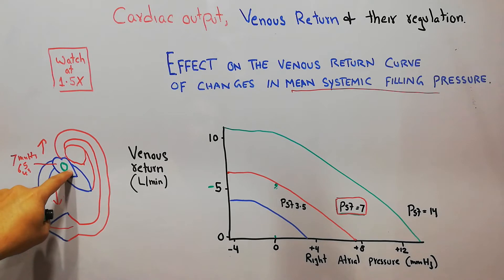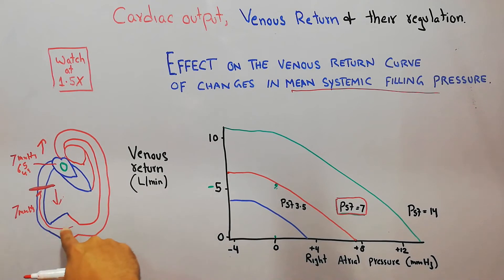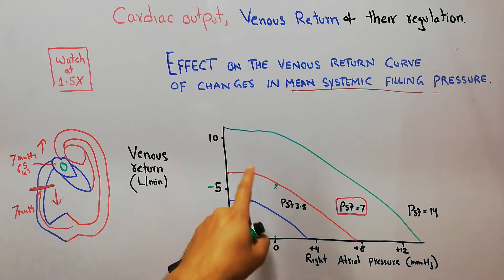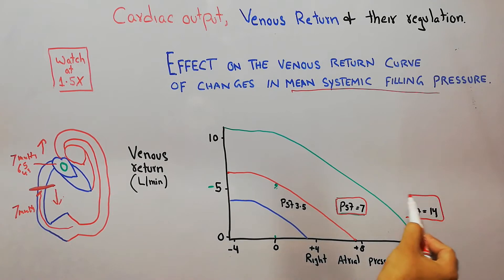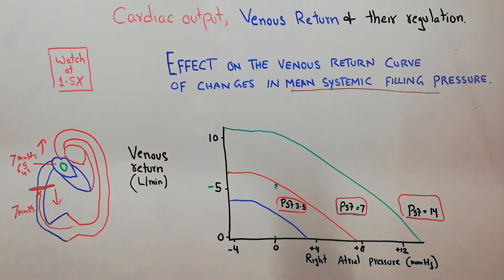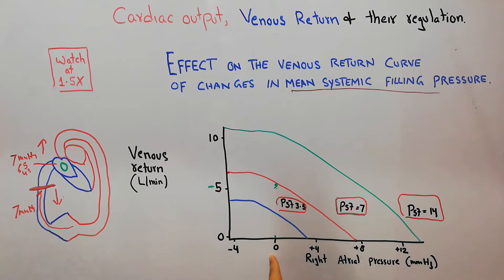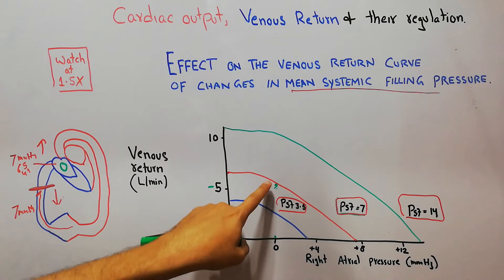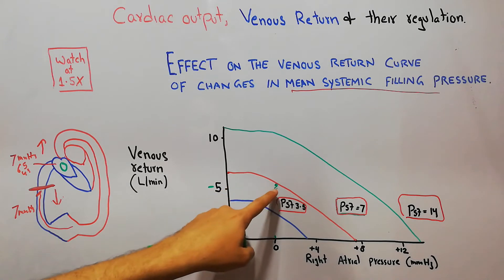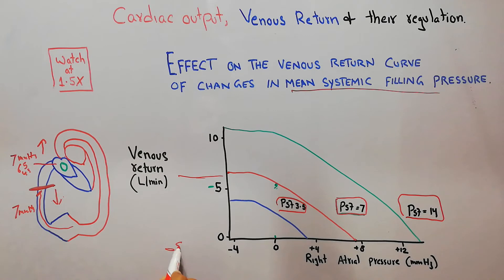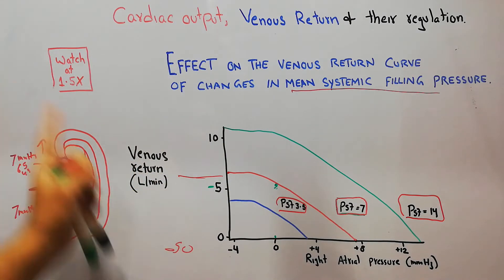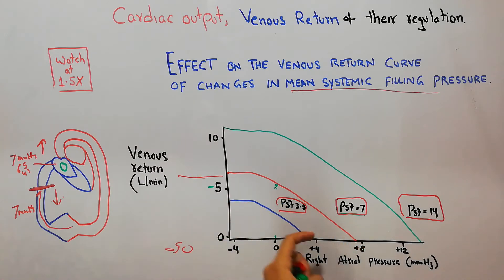As long as the pressure in the right atrium has not reached 7 mmHg, the blood will keep on moving towards the heart. This is the normal venous return curve. When the right atrial pressure starts decreasing, there is a slight increase in venous return above the 5 L/min level, but then there is a plateau — even if this pressure reaches minus 50, there will be no further change in venous return. But when it starts increasing, at the level of 7 mmHg the venous return touches zero.